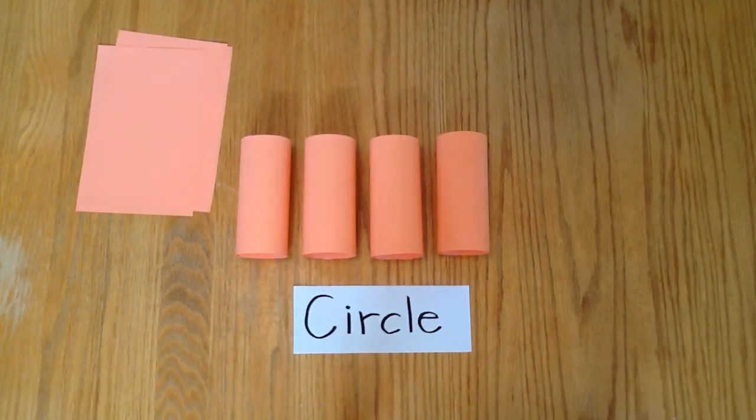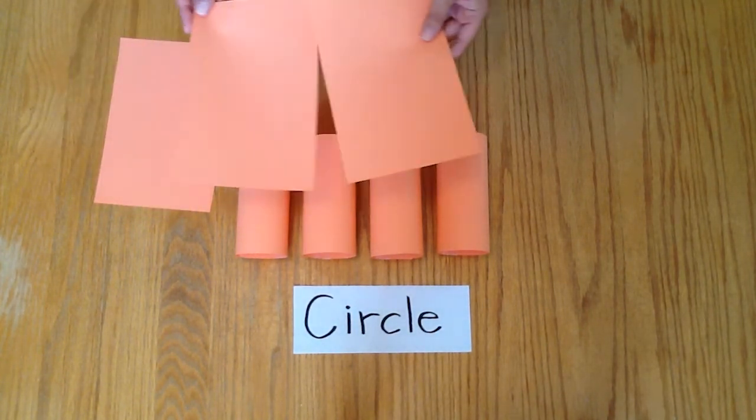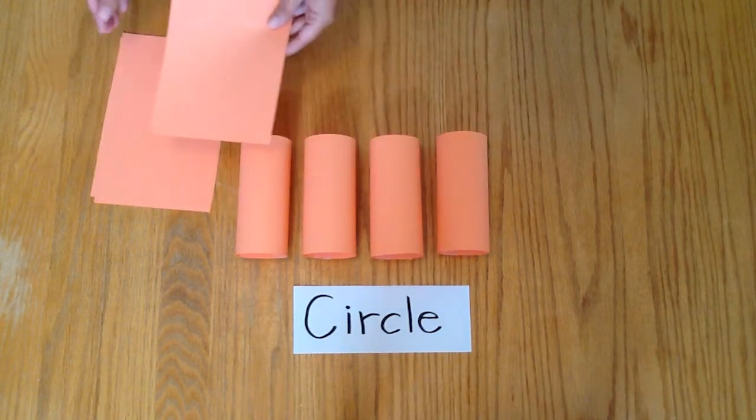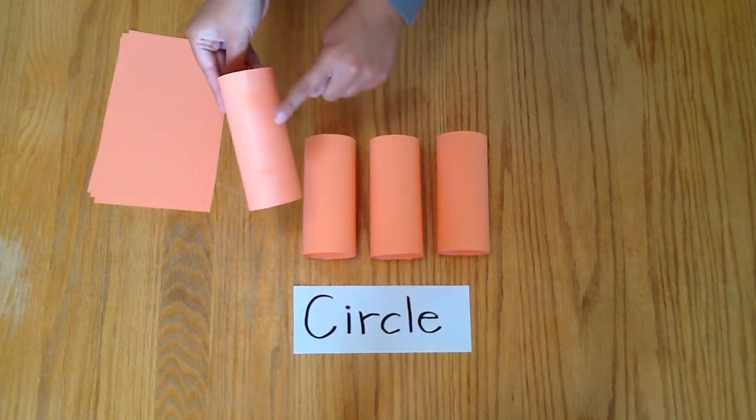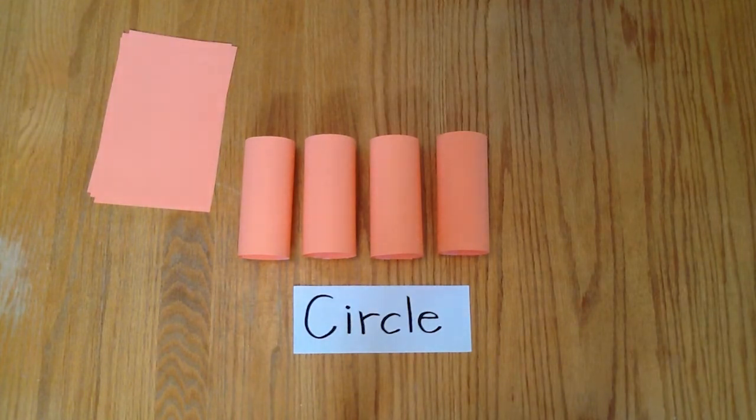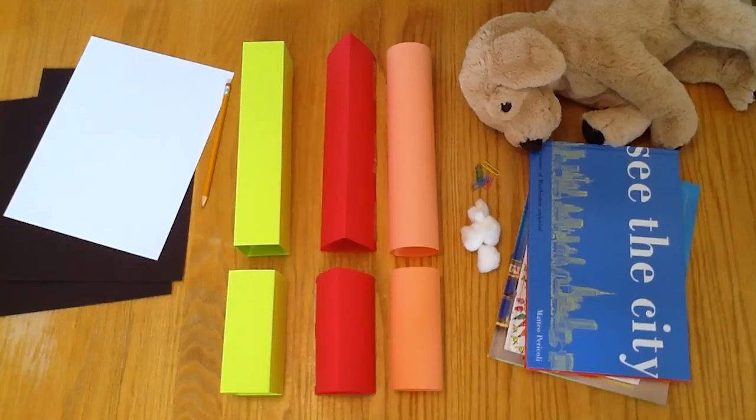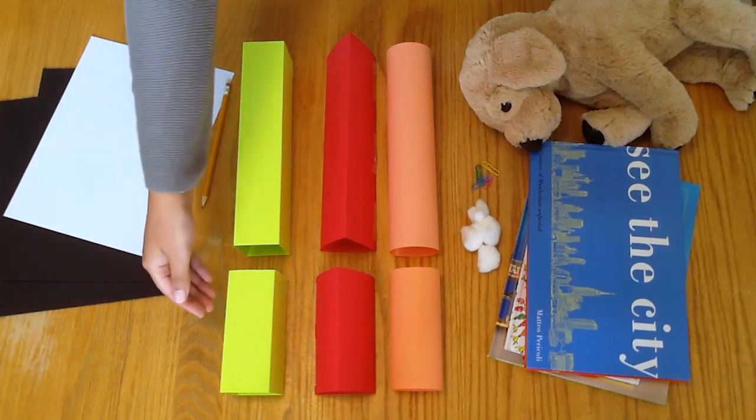The last shape of paper blocks is a circle. Take your piece of paper, cut it in half and roll it into a cylinder or tube and secure it with tape. Repeat until you have a total of four circle paper blocks. Perfect! Once you have finished making your different shaped paper columns and paper blocks, it is time to test them out.